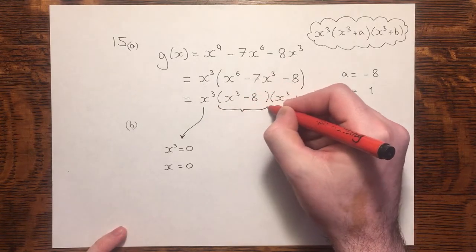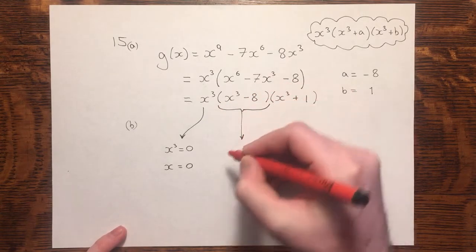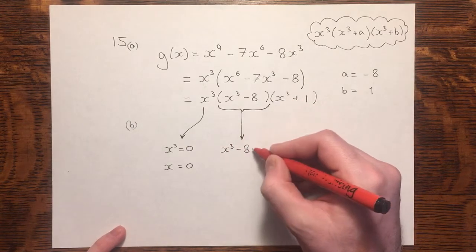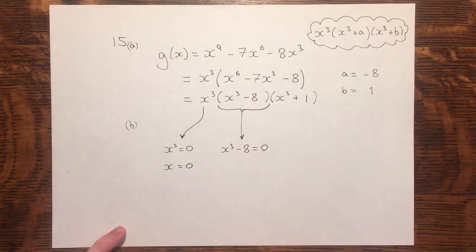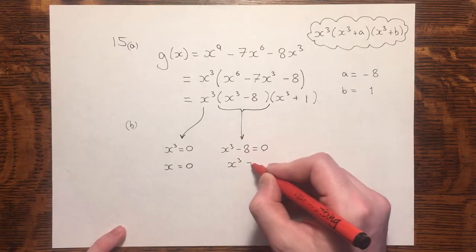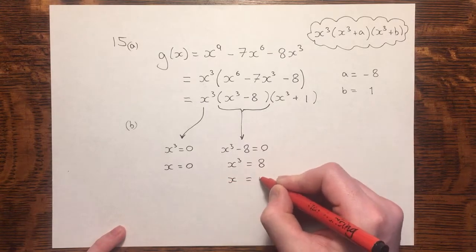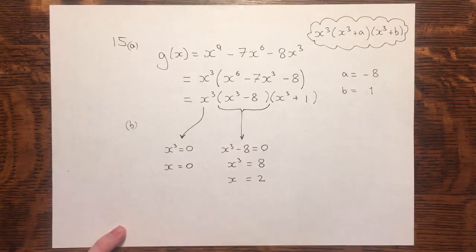Our next factor is x cubed minus 8, and since we're getting roots, we know the factor will equal 0. Rearranging, x cubed equals 8, and the cube root of 8 is 2. We now have another root.